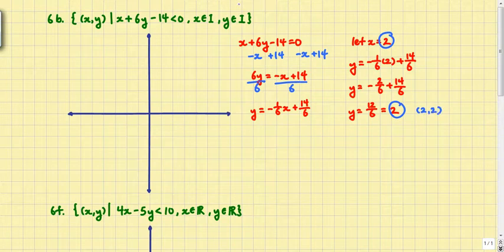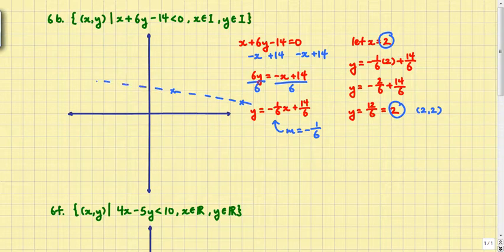So (2, 2) is going to be a point on our line and we know that our slope is negative 1 over 6. Therefore, if we were to graph this, I'll graph my point (2, 2) right here. And I will run down one space and then 1, 2, 3, 4, 5, 6. That's my second point. And I will draw a dashed line in this case because it says less than and not equal to.